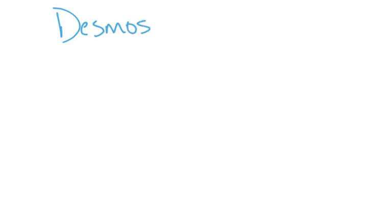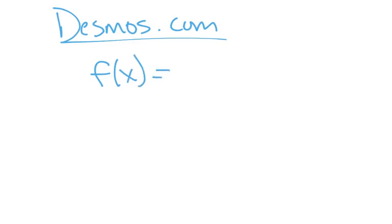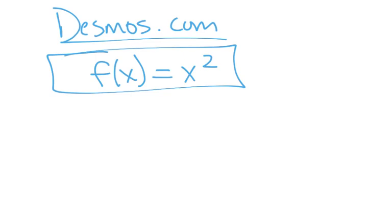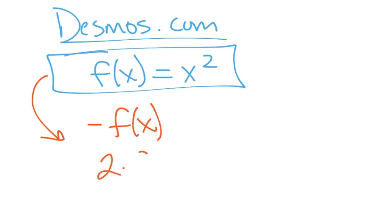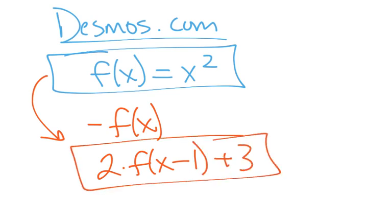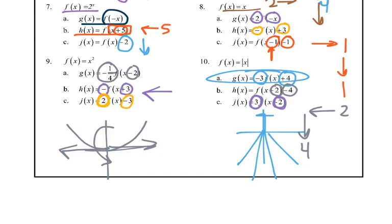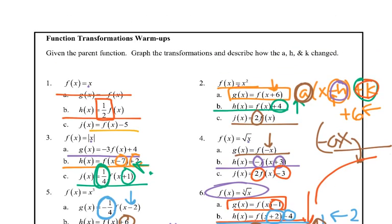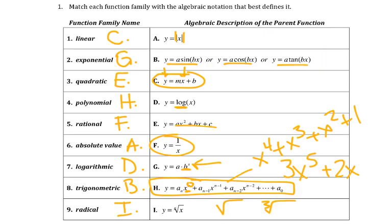If you needed some help visualizing that, you can either download the Desmos app or go to desmos.com. I believe you can graph them by typing in f(x) equals and then whatever the thing was, and that will show you that graph. Then in the next line you can type something like negative f(x) or 2 times f(x) minus 1 plus 3, and it might show that too. You can check that out if you still need help. But there we go — there are all those extra ones we did, and there's our homework, and we're done.